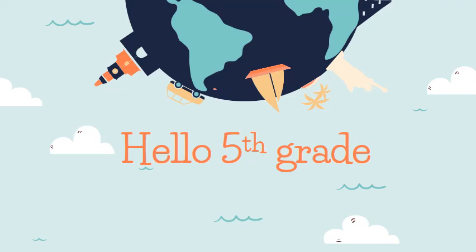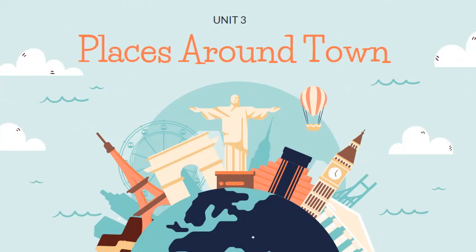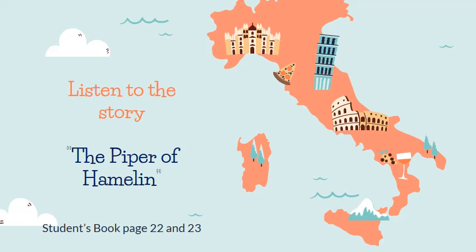Hello, 5th grade! How are you today? So, last class we started learning about Unit 3, and we're going to continue today talking about places around town. So today we're going to listen to the story The Piper of Hamelin. If you want to listen, or if you want to read along with me, you can open your student's book to page 22 and 23.